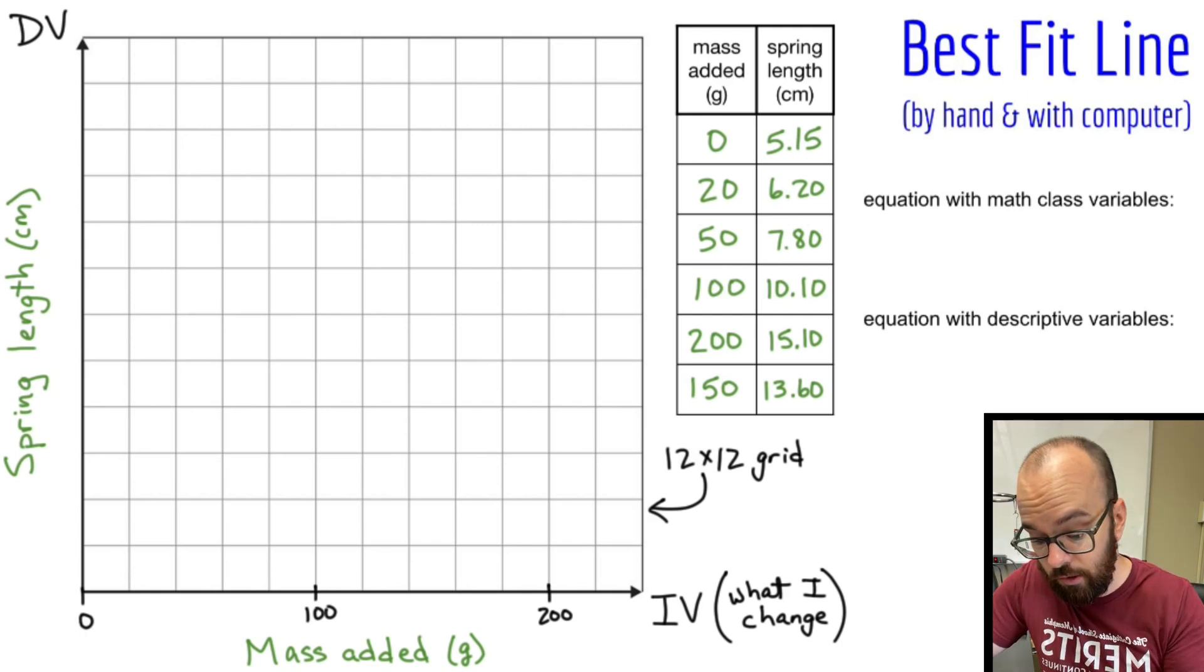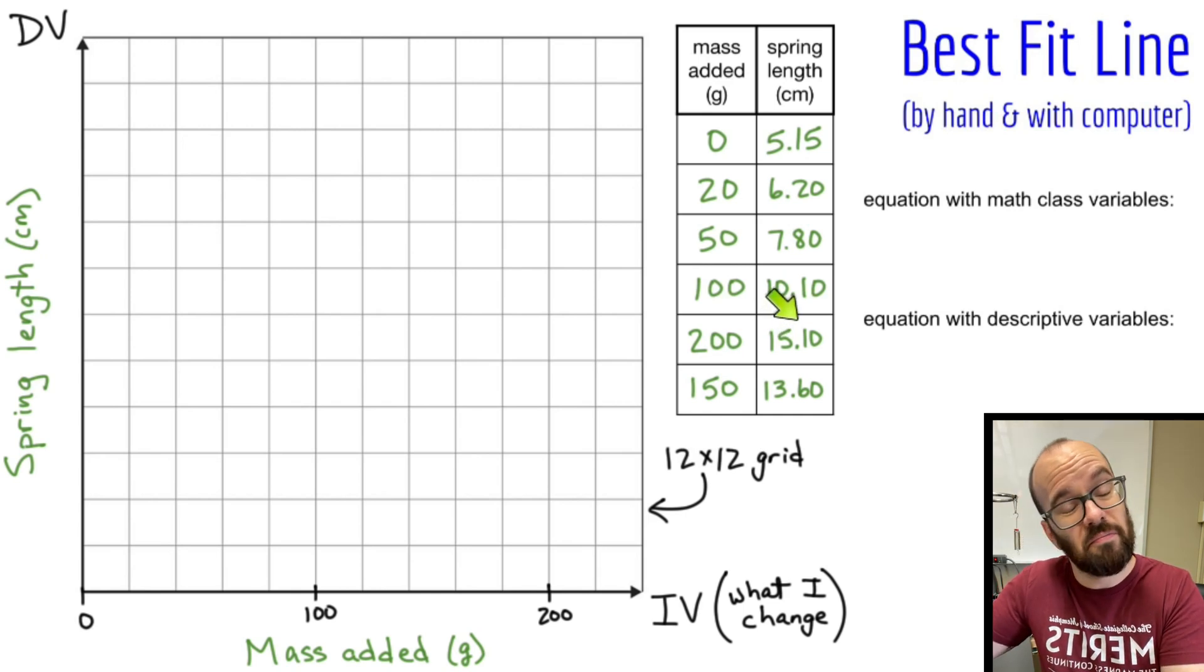Now let's do the same thing for the vertical. It looks like I've got 12 boxes again vertically and I've got to get up to 15.10. If every box was one, that would only get me up to 12, that's not going to work. If every box was two, that would get me up to 24, which would work.